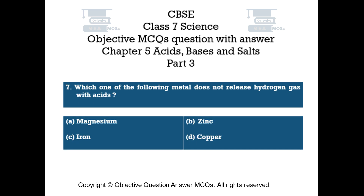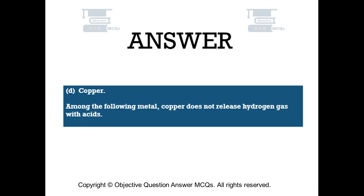Question number 7: Which one of the following metals does not release hydrogen gas with acids? Option A: magnesium. Option B: zinc. Option C: iron. Option D: copper. The right answer is option D — copper. Among the following metals, copper does not release hydrogen gas with acids.